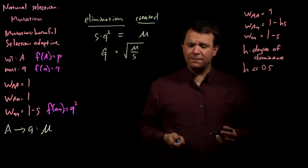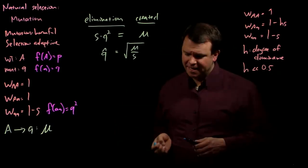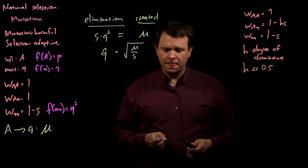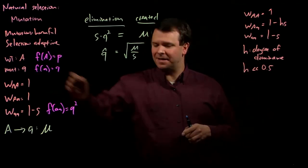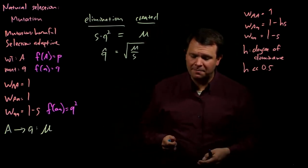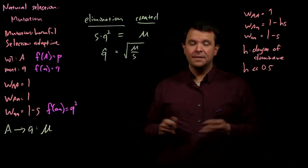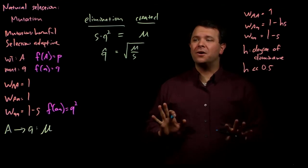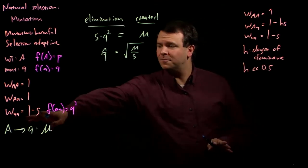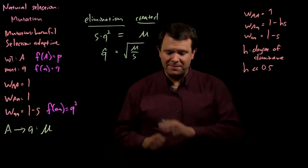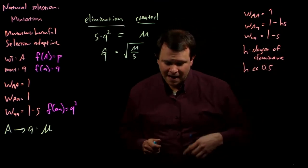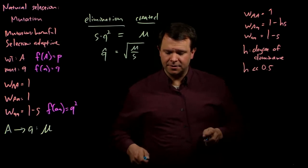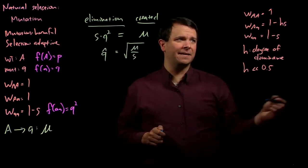Remember from our discussion of mutations, that if Q is small, then most of these recessive little a alleles are going to show up in heterozygotes. So much so, that we are completely going to ignore the homozygous genotype entirely. The selection coefficient against the heterozygotes is H times S.